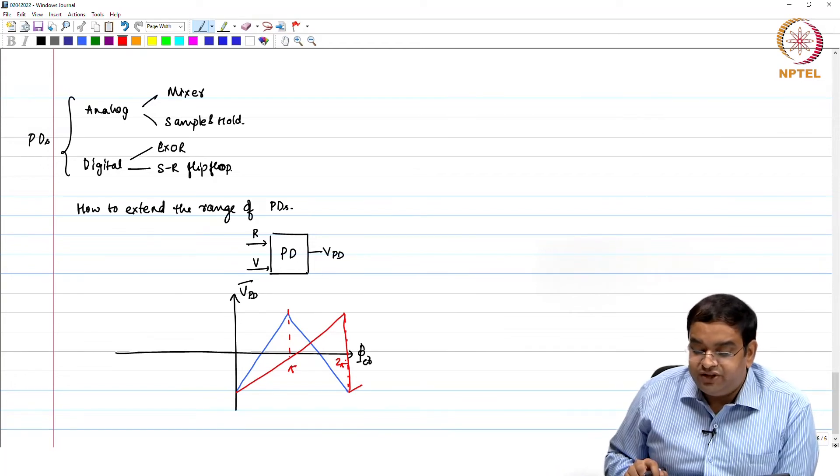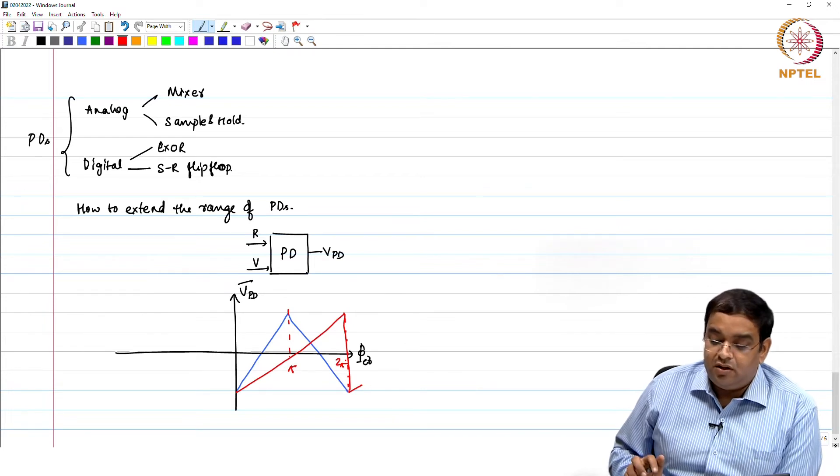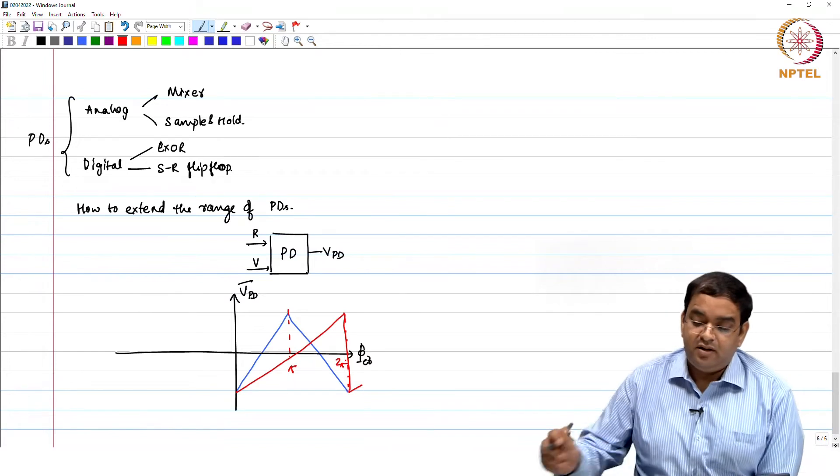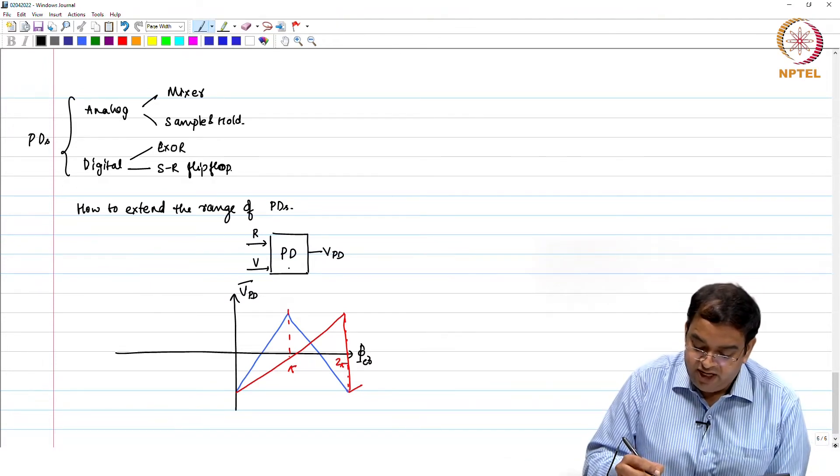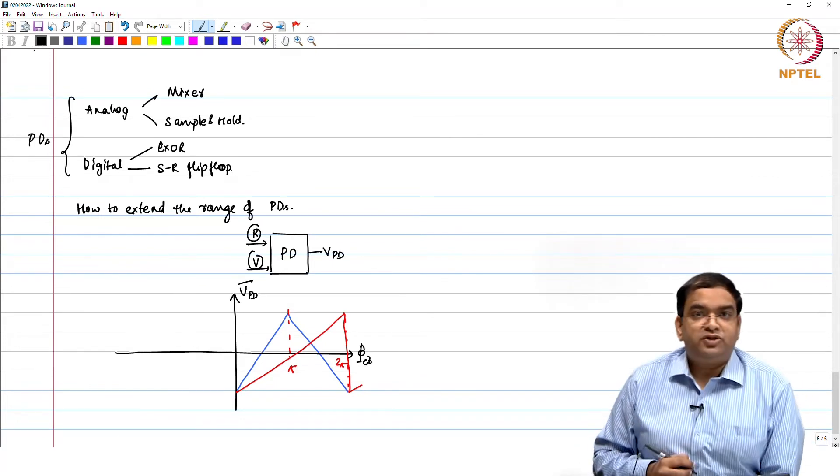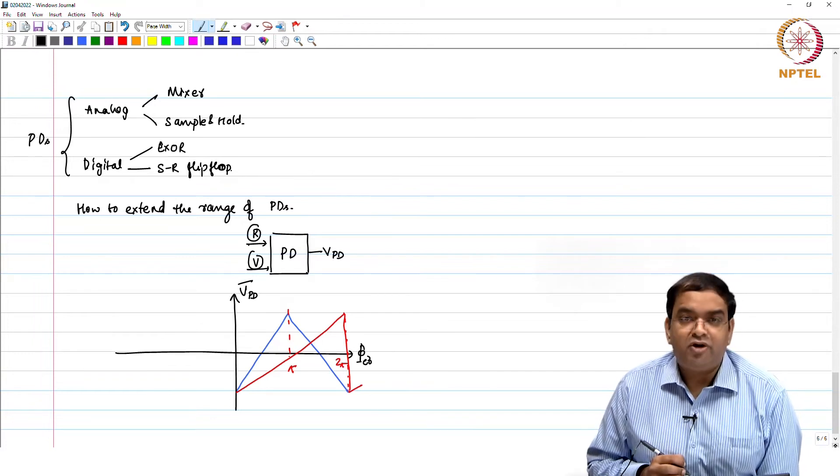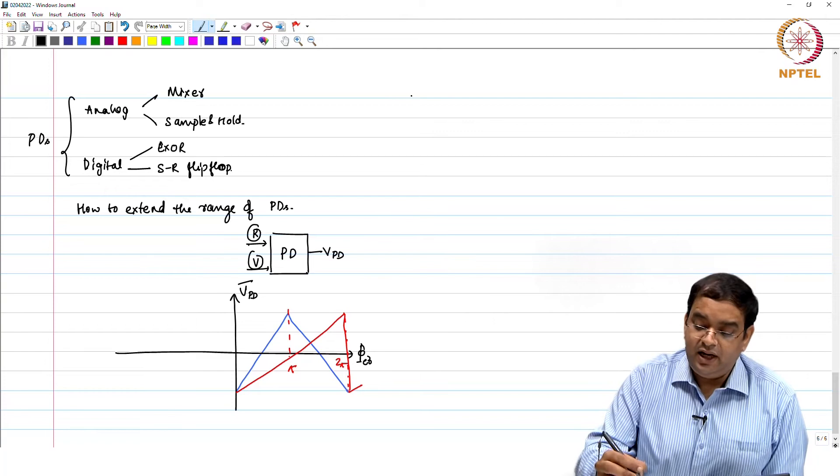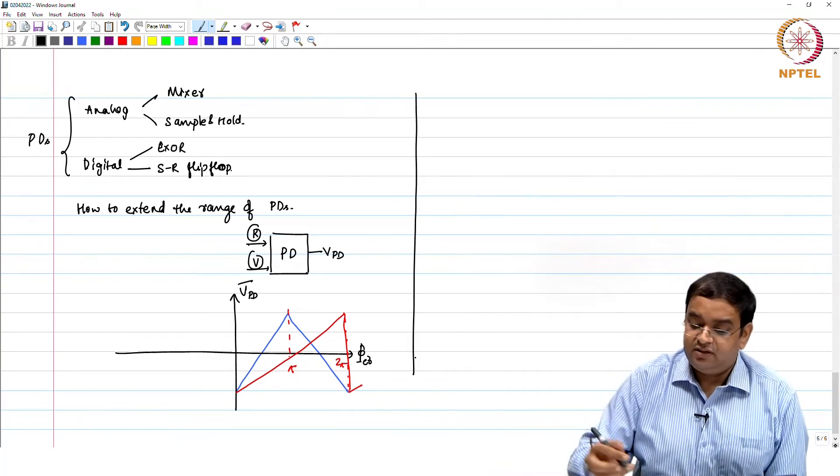So what I want to do is actually I want to extend the range of the phase error between R and V signals. If you reduce the frequency here for R and V, then your range will actually get extended.